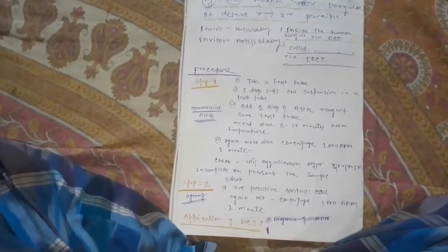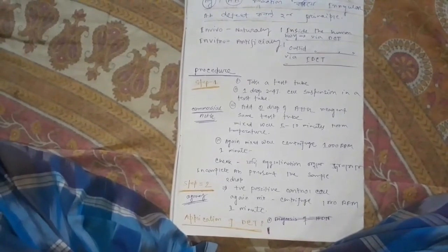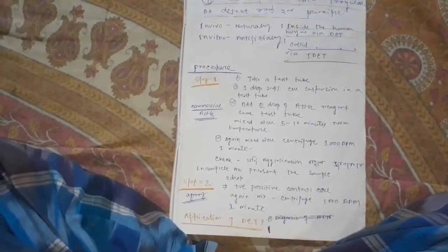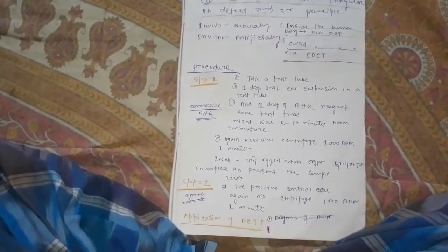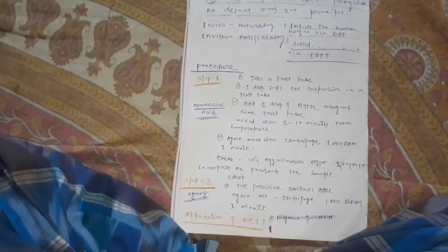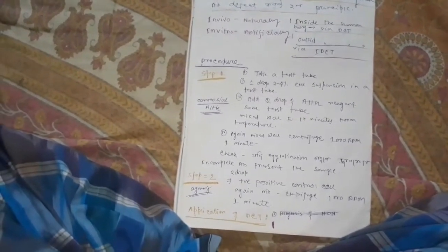Then we will see the centrifuge. Look for agglutination reaction. So if there is incomplete irregular antibody present, when the agglutination occurs, we follow the procedure.